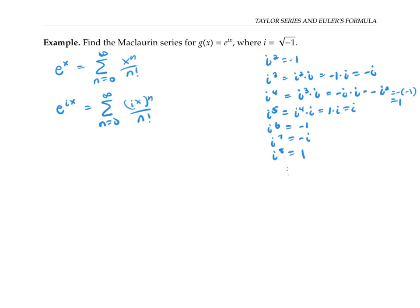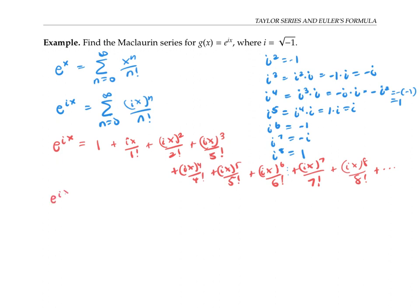Now you might be wondering, what does e to the ix even mean? How can you take e to an imaginary number times a real number? But I'm going to ask you to set aside your disbelief for a moment and just work out what this series simplifies to. The first term, when n equals 0, is just going to be 1. The next term, when n equals 1, is going to be ix over 1 factorial. Then we have ix squared over 2 factorial, ix cubed over 3 factorial, and so on. That can be rewritten as 1 plus ix plus i squared x squared over 2 factorial, plus i cubed x cubed over 3 factorial, and so on.